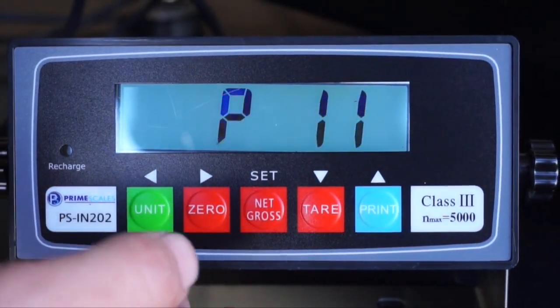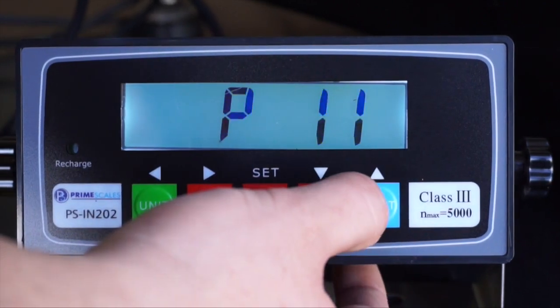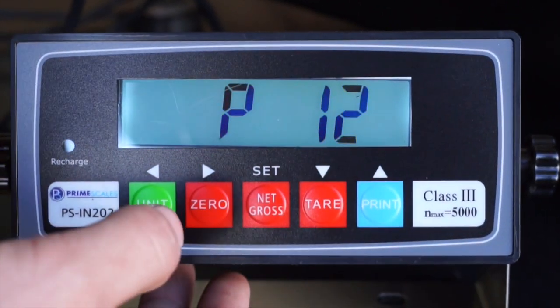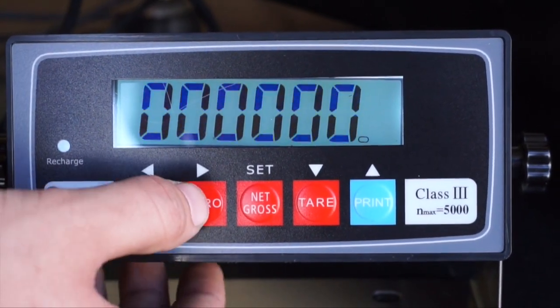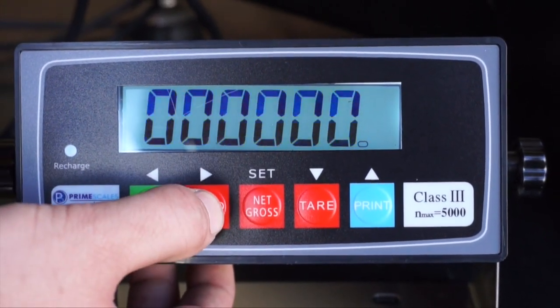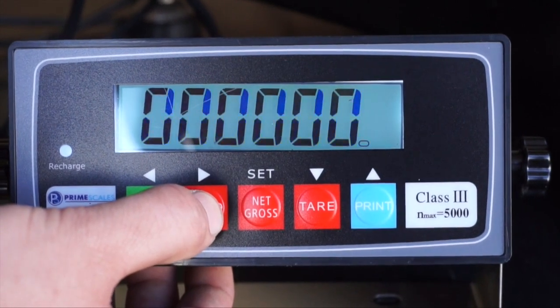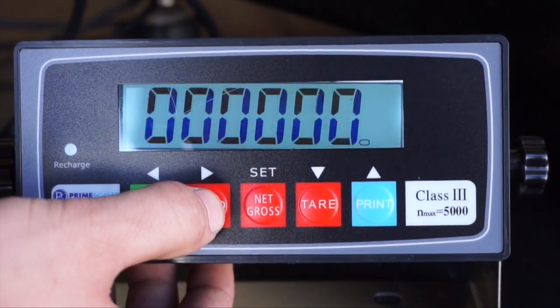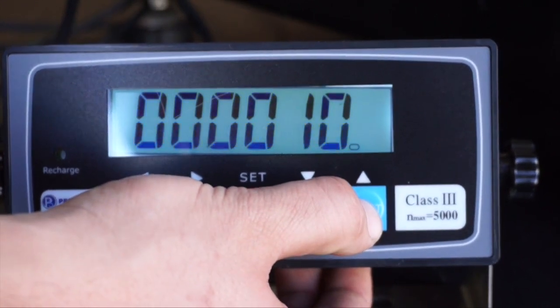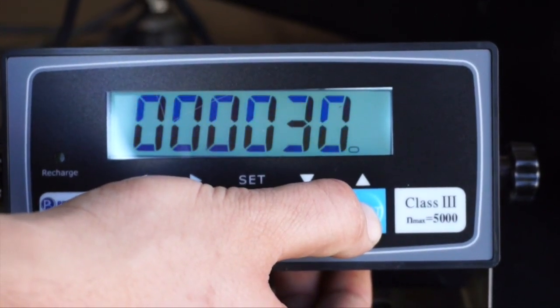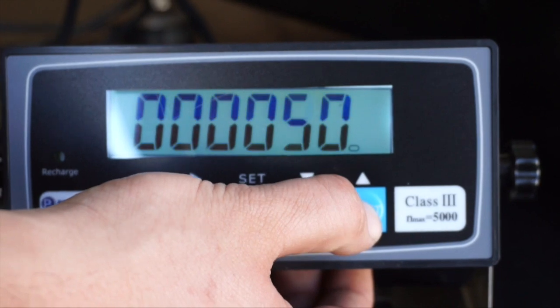Press the print button to move up to P12. Press zero to enter P12. Press zero again to move and set proper weight that we'll calibrate with. Press the print button to move up numbers. We will use 50 pounds for this calibration.